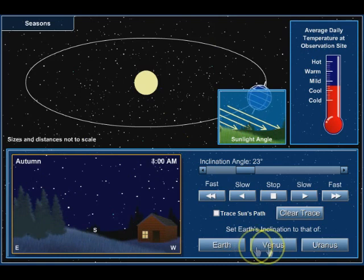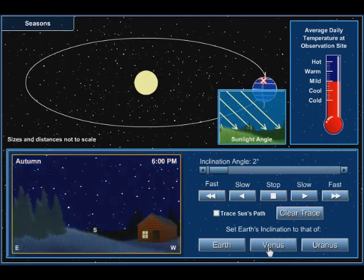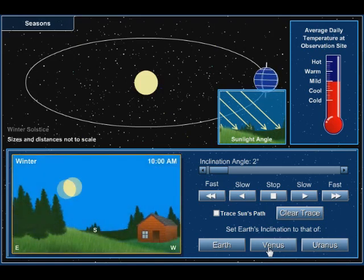And you'll notice where the Sun is for the Earth. But if I change it to Venus, it's up a little higher. So the axis tilt is going to affect the Sun's position in the sky, which makes sense.